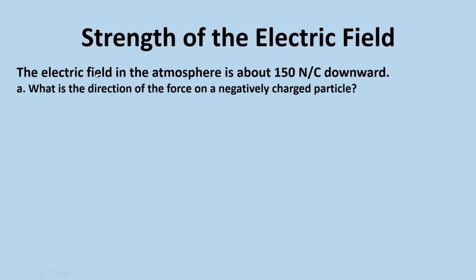Another exercise: the electric field in the atmosphere is about 150 newtons per coulomb, directed downward. What is the direction of the force on a negatively charged particle? The rule states the field and force have the same direction only if the charge is positive. Since this charge is negative, the force and field are in opposite directions. Because the electric field is downward, the force on the negative charge is upward.